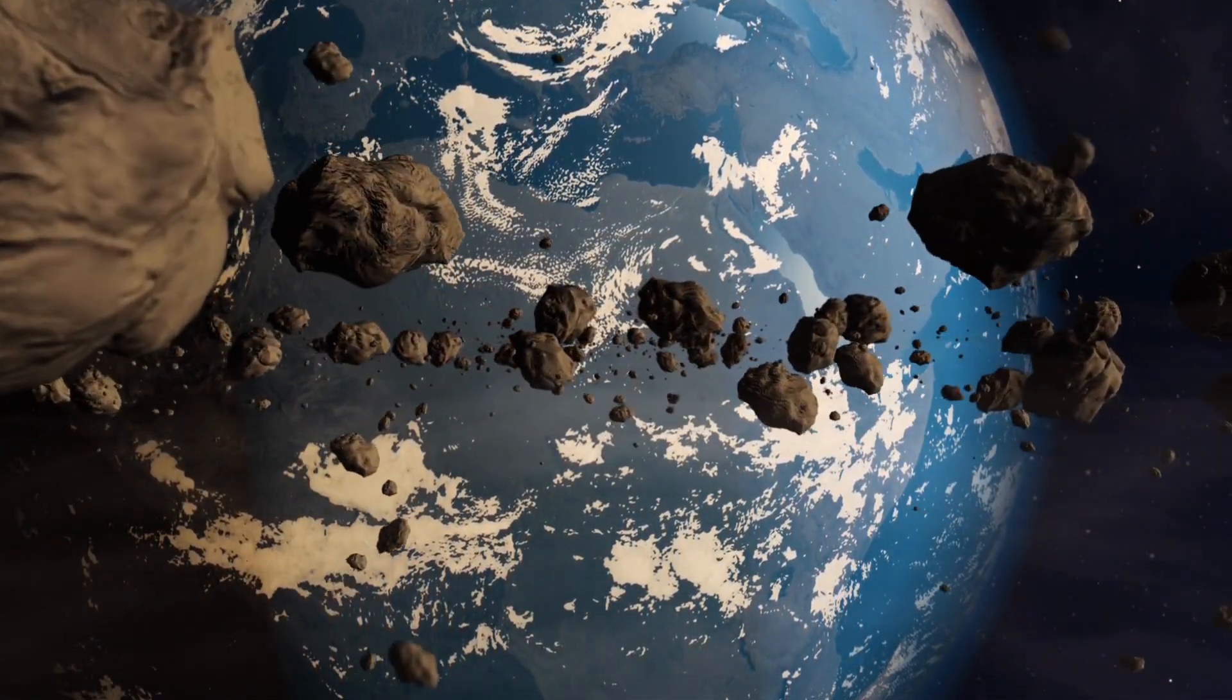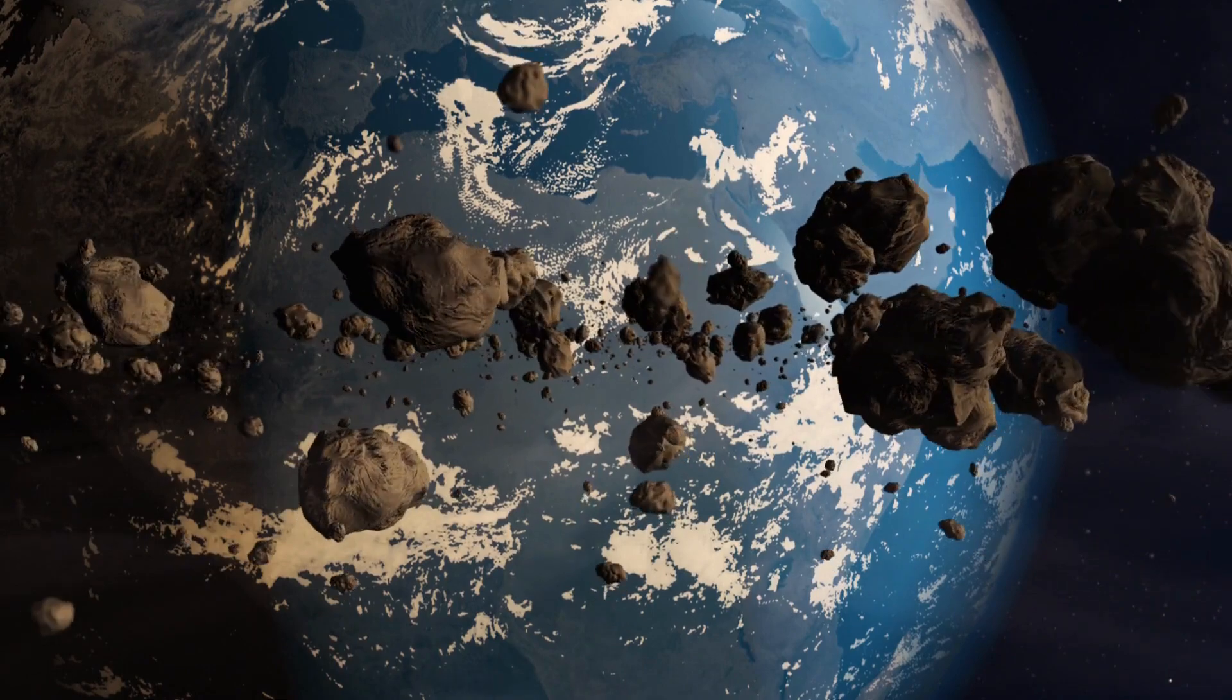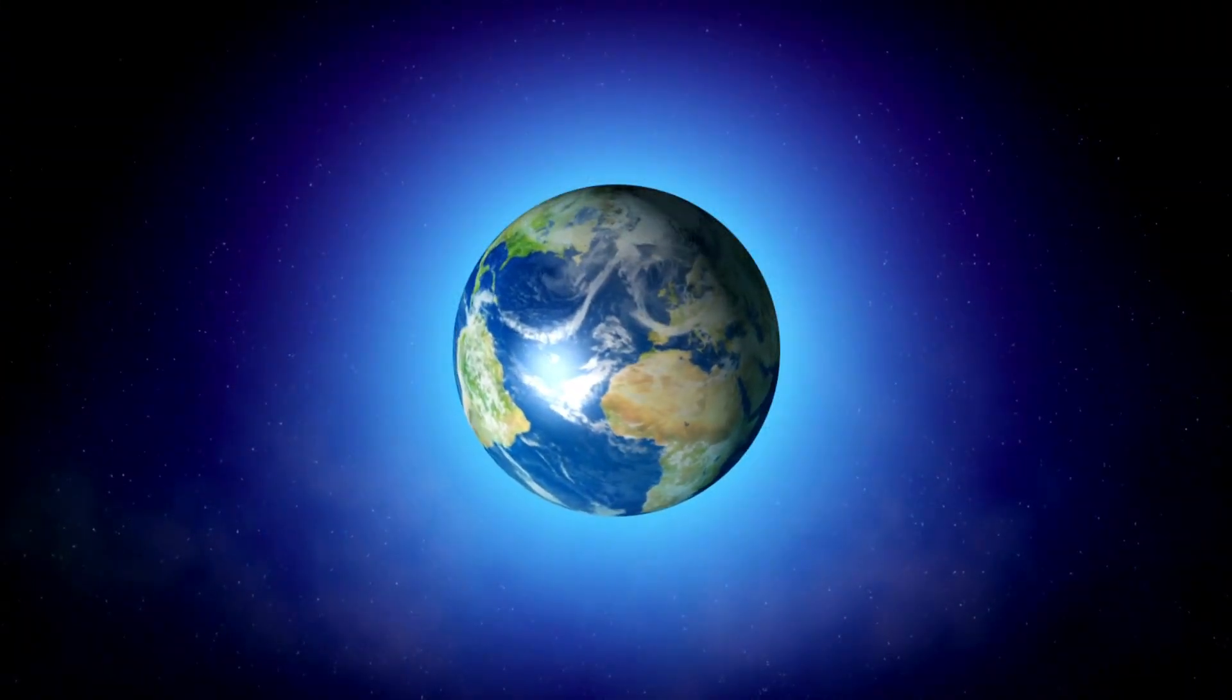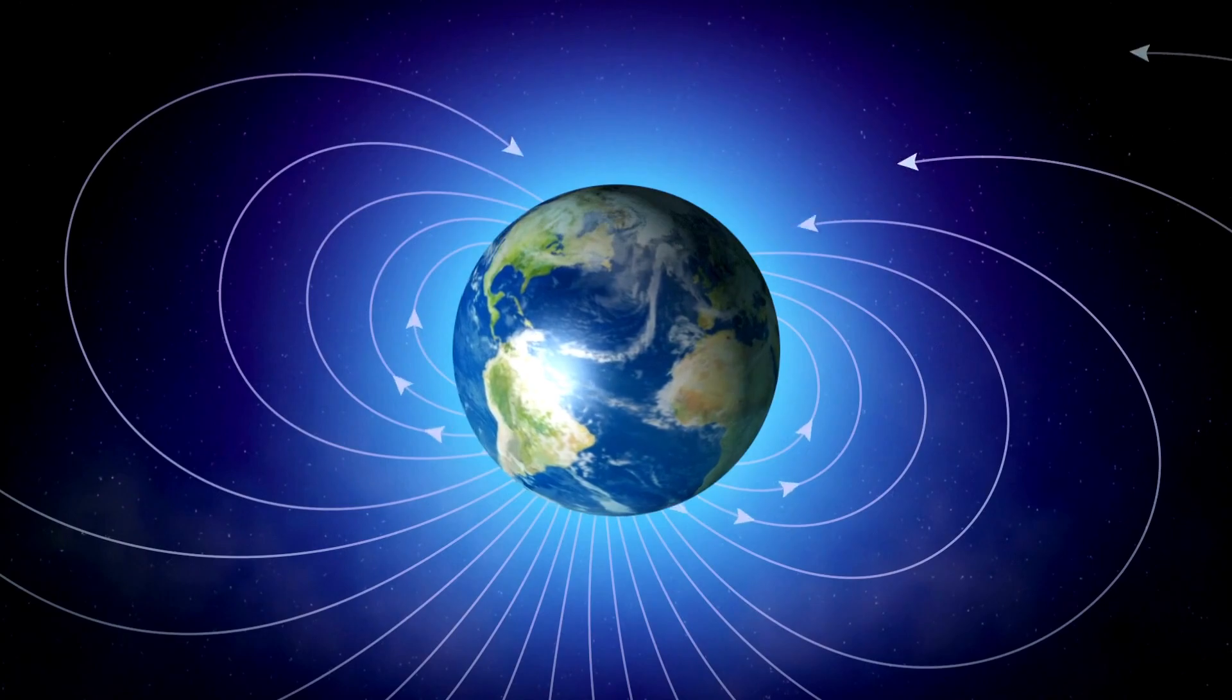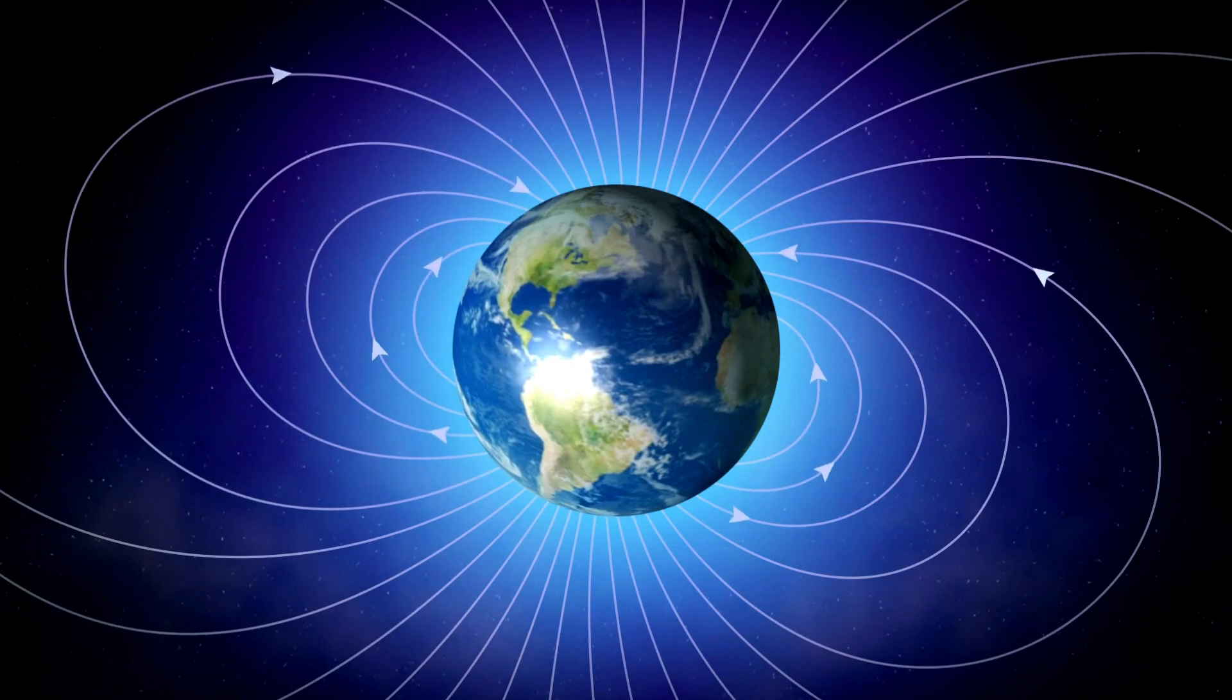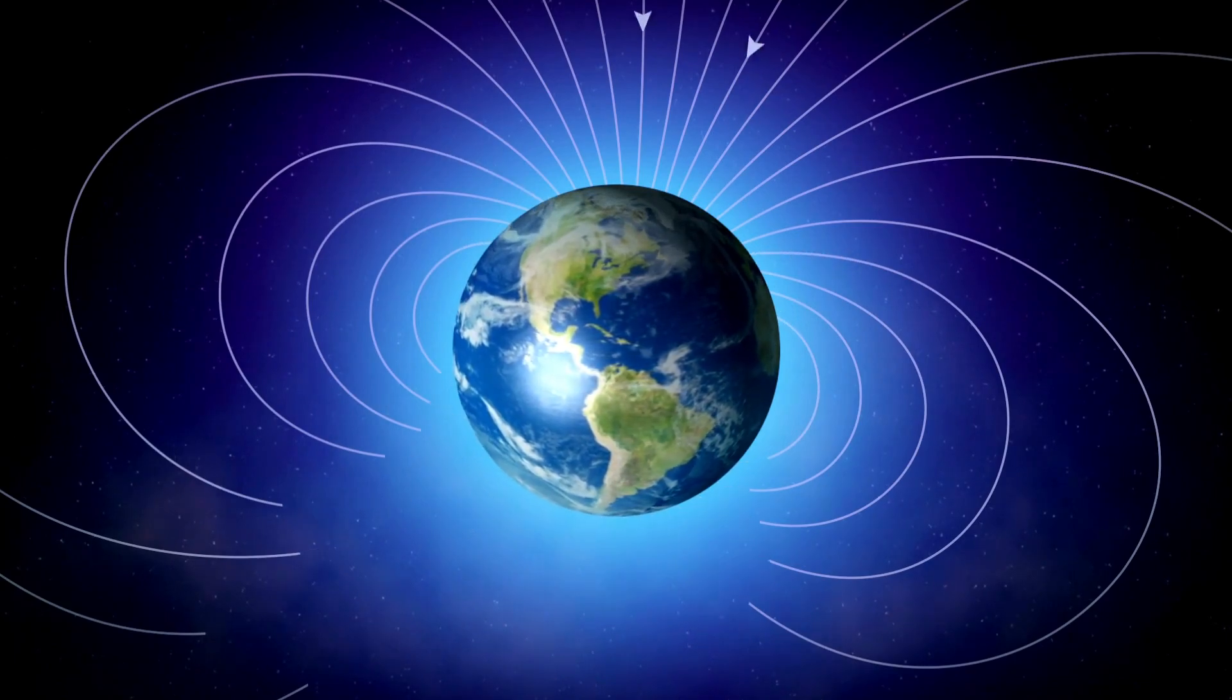At the planet's heart lies the inner core, a solid sphere of iron and nickel that's 759 miles wide and as hot as 9,800 degrees Fahrenheit. The inner core is surrounded by the outer core, a 1,400-mile-thick band of iron and nickel fluids. Beyond the outer core lies the mantle, a 1,800-mile-thick layer of viscous molten rock on which Earth's outermost layer, the crust, rests.